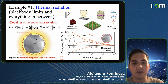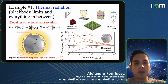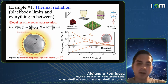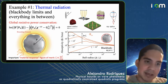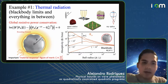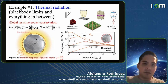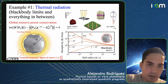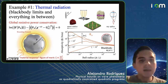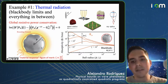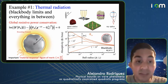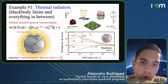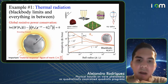Just doing a very simple quadratic program where you're optimizing thermal radiation — which is the same as optimizing angle-integrated absorption over the domain — and just enforcing global resistive power conservation gives you some pretty interesting results.